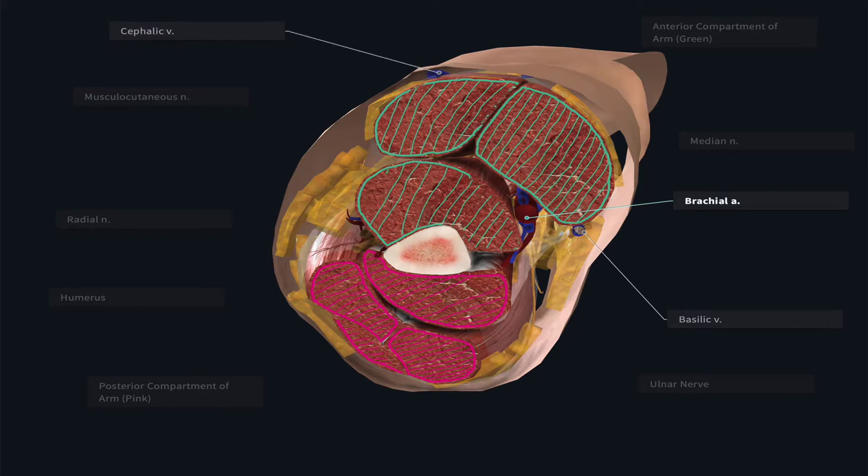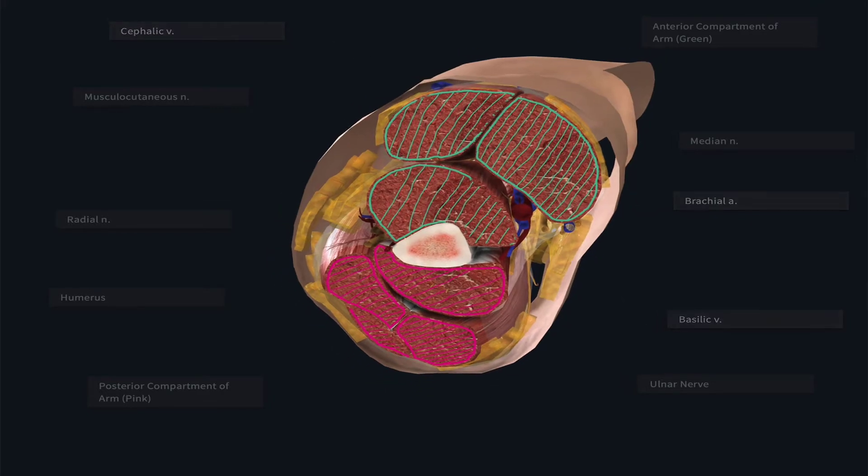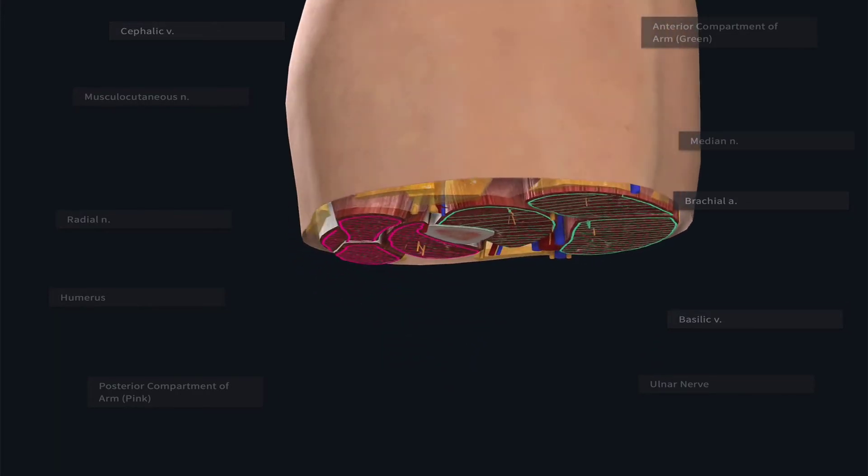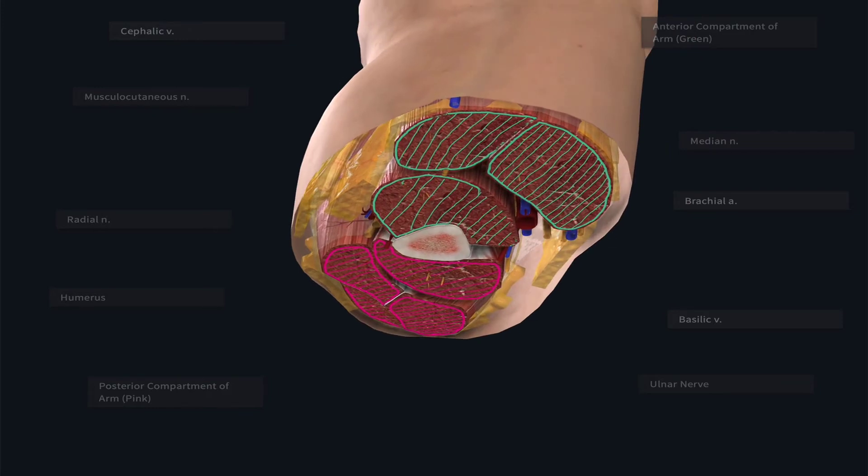So I would strongly recommend after looking or listening to some of these other recordings and lectures on the components of the arm to come back and revisit this one to better understand the different compartments and structures within a cross-sectional view.